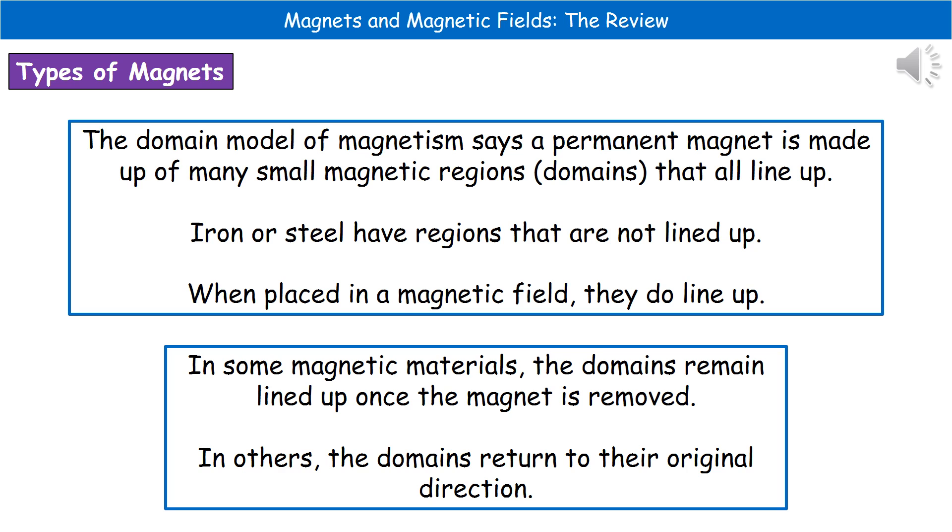So that's pretty much what our domain model says is our permanent magnets. Then all of those little domains are all lined up. Whereas in our induced magnets, when they're not exposed to that magnetic field, those domains are not lined up. But when we do expose them to a magnetic field, it causes the domains to line up. Now, what we actually find is that once you remove that magnetic field, some of them will stay in their actual lined up version. Whereas others, once that magnetic field has been removed, they're going to return to their original direction.